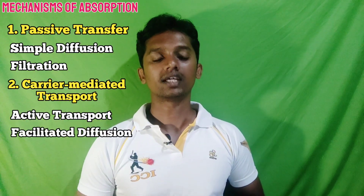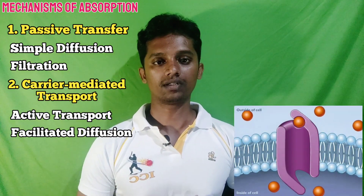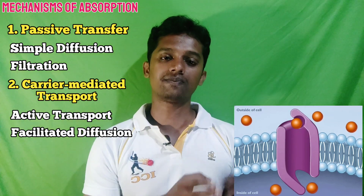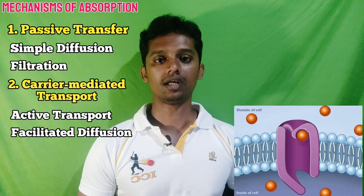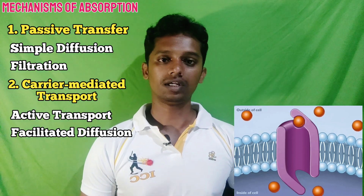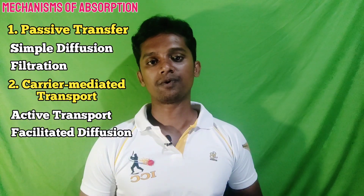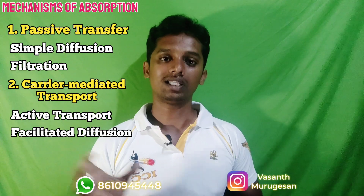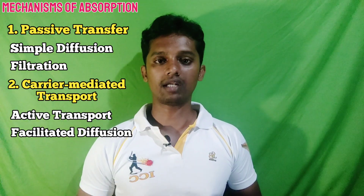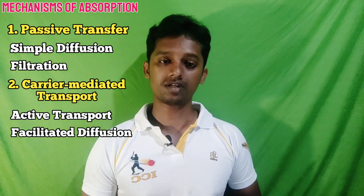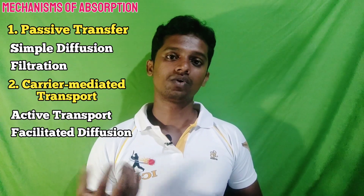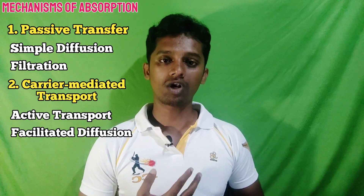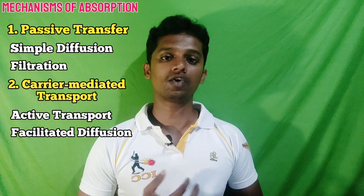The second subtype is facilitated diffusion. It is also carrier-mediated transport, but energy is not required, and the direction of transportation is in the same direction as the concentration gradient — unlike active transport which moves against it. Examples of active transport in the body include the absorption of iron and amino acids. An example of facilitated diffusion is the uptake of glucose in the liver.